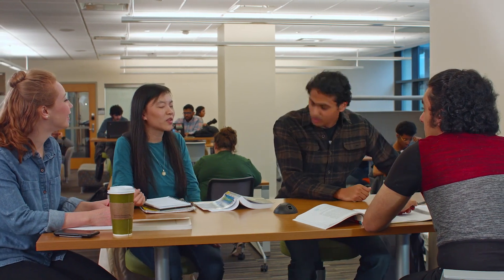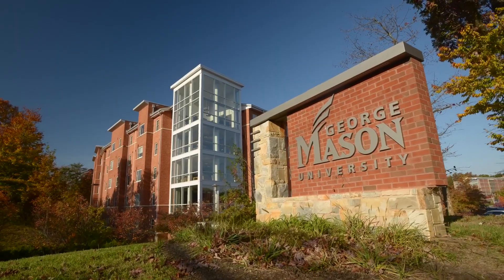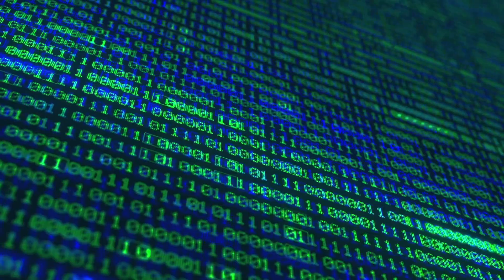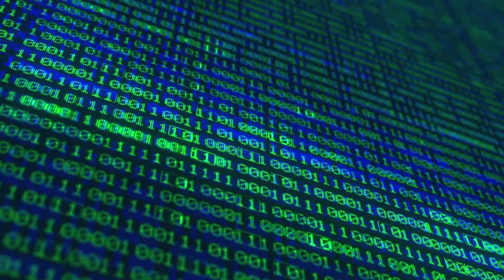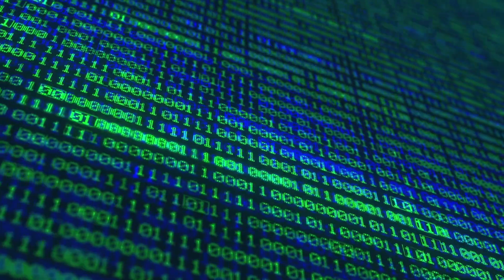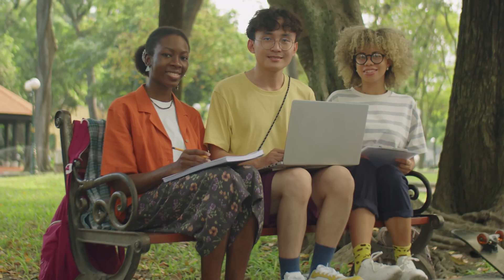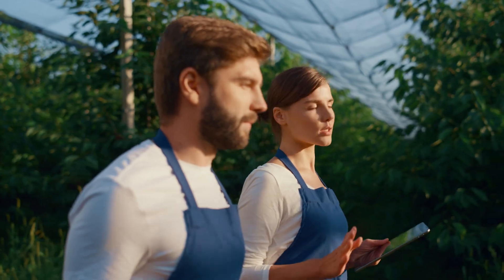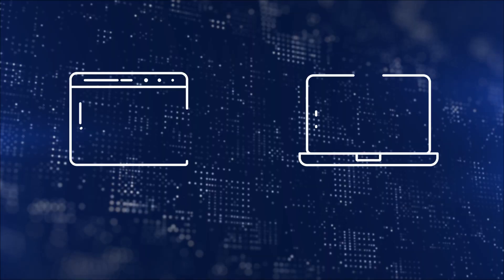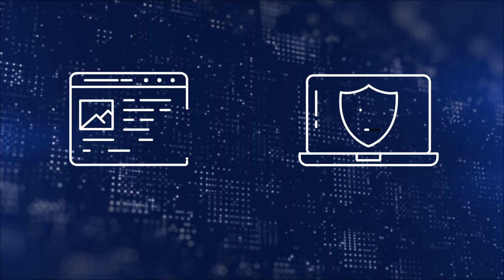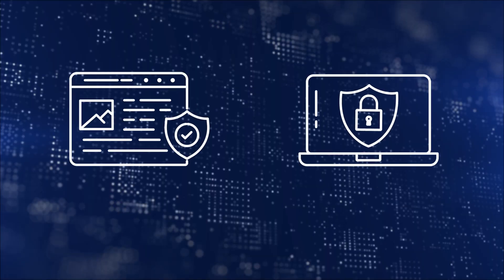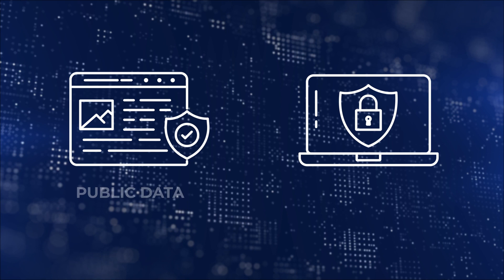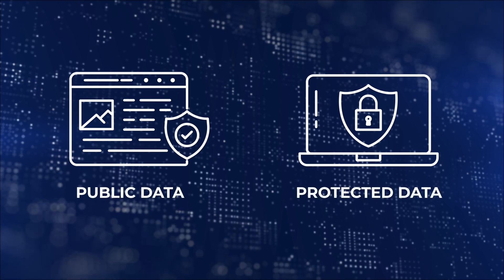At Mason, data security and privacy considerations are critical across various domains. Data plays a vital role in our administrative, academic, and research objectives. We broadly classify our data into two major categories: public data and protected data.